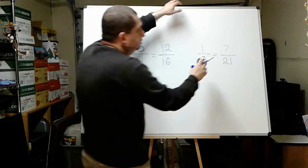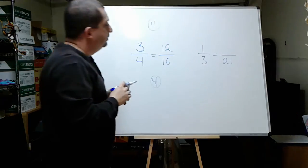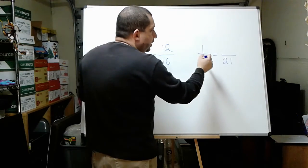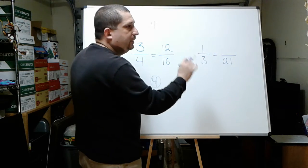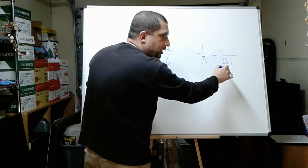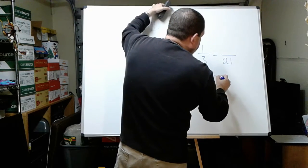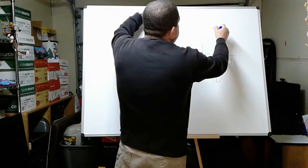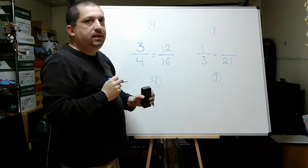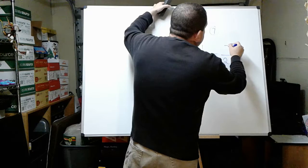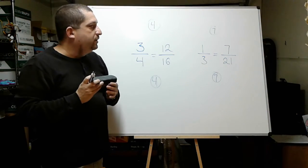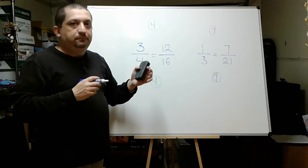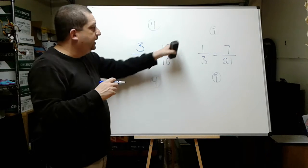Let us do this example right here now. So I have 1 over 3 and I am missing the number right here. So I am going to think: what number do I need to multiply times 3 to get to 21? That will be the number 7. I am going to write my number 7 right here. So 7 times 3 is equal to 21. I am also going to write my number 7 right here at the top. And now 7 times 1 is also equal to 7. So there you go — that's the number that I was missing, and that's how we find the missing number, or the equivalent fraction with a given denominator.